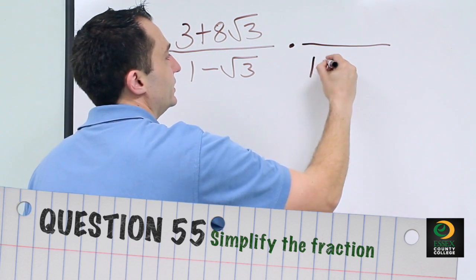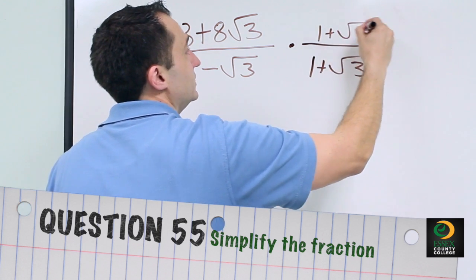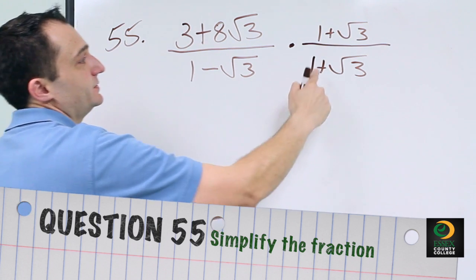Since this is a minus, we're going to have a plus, top and bottom. If this was a plus, for example, then this would be a minus.